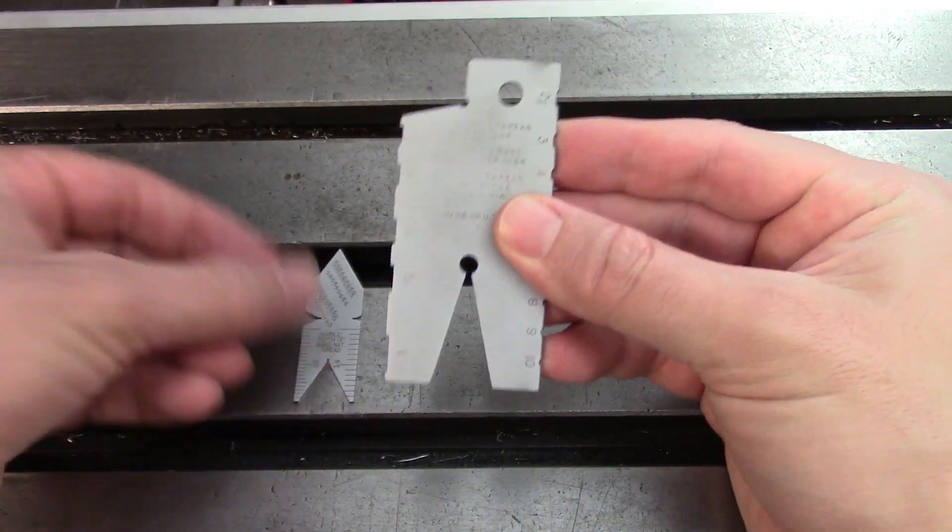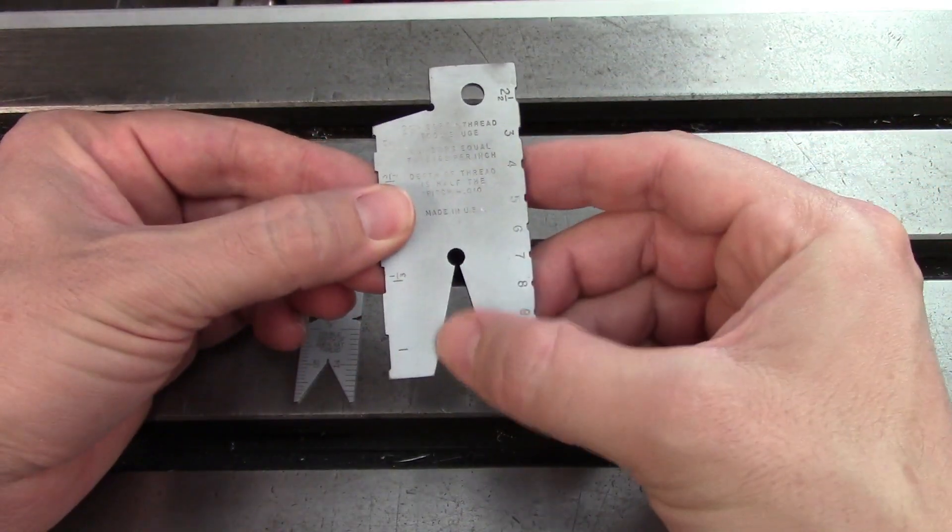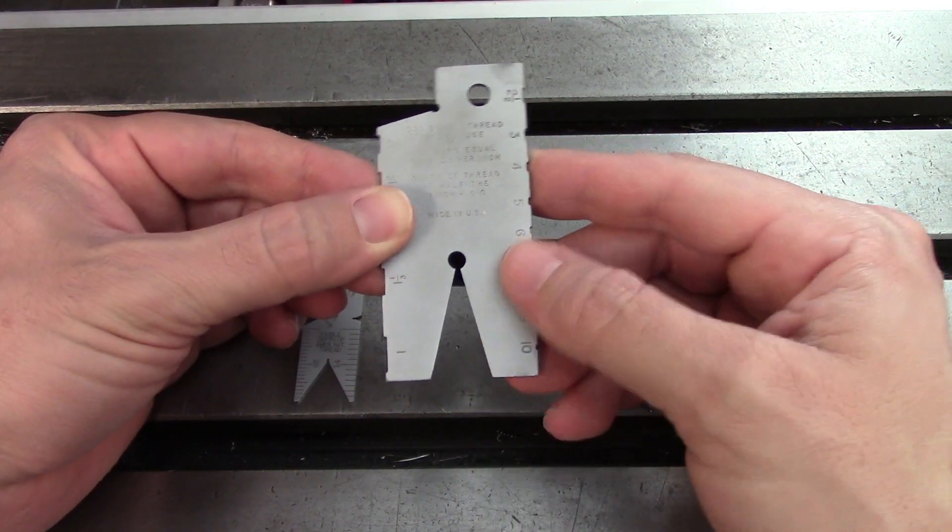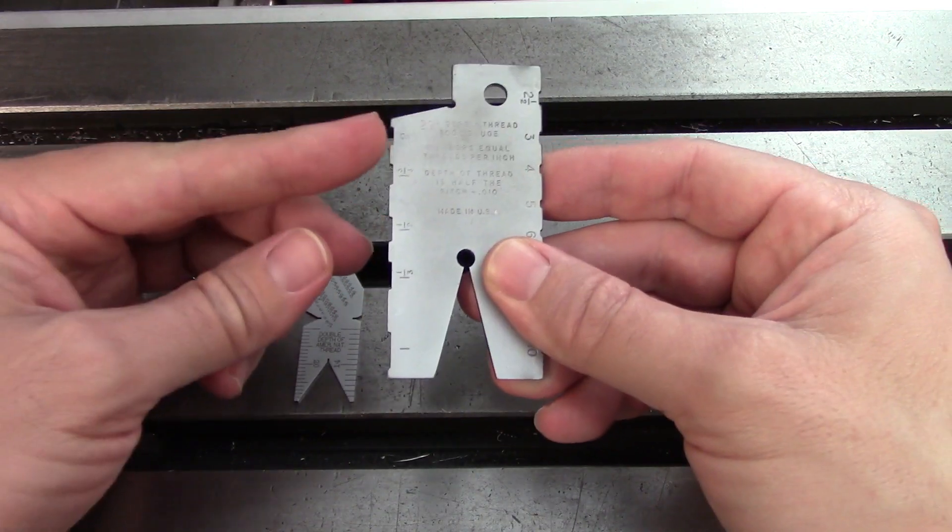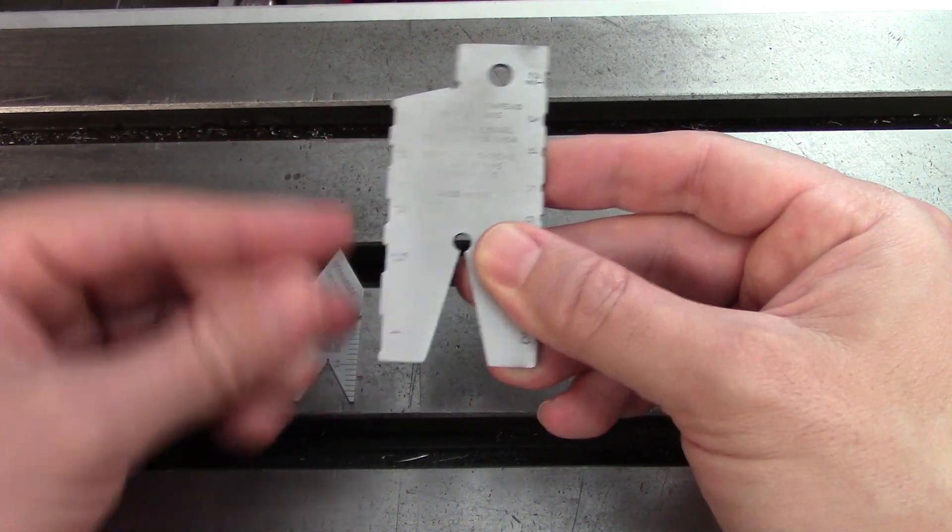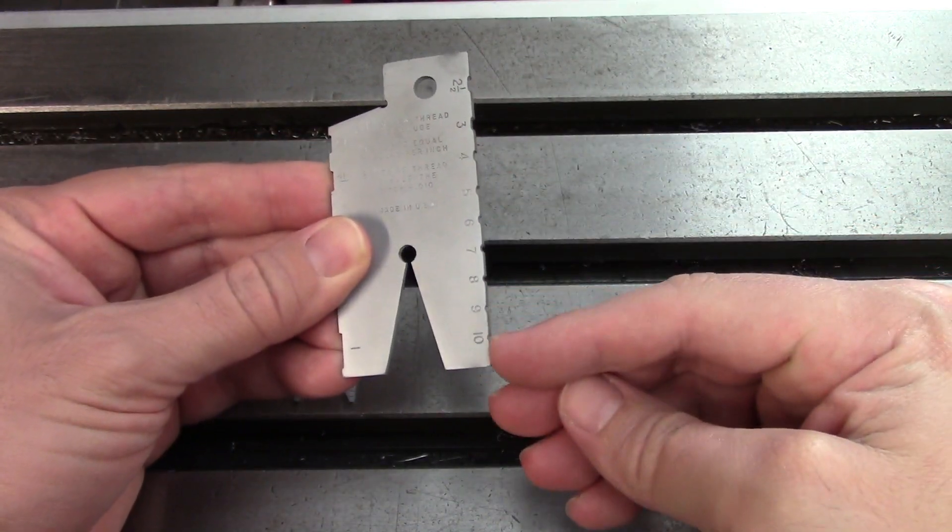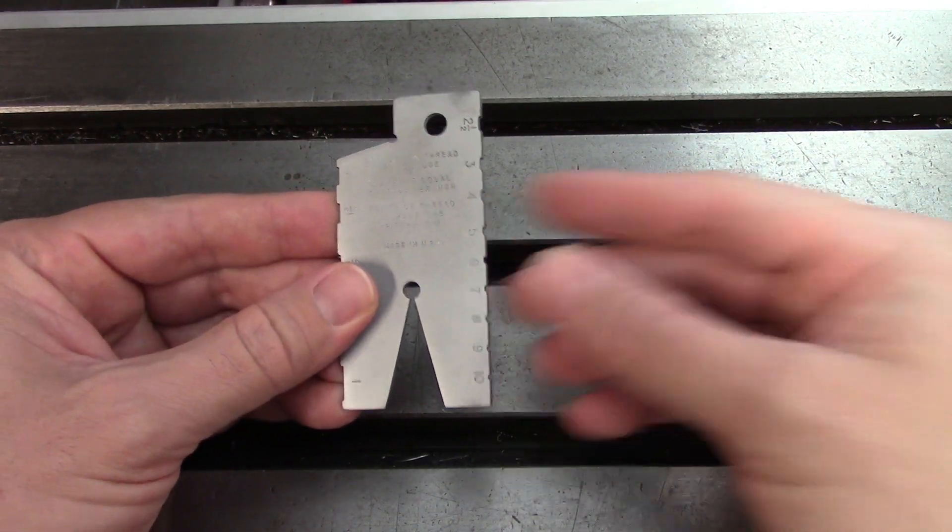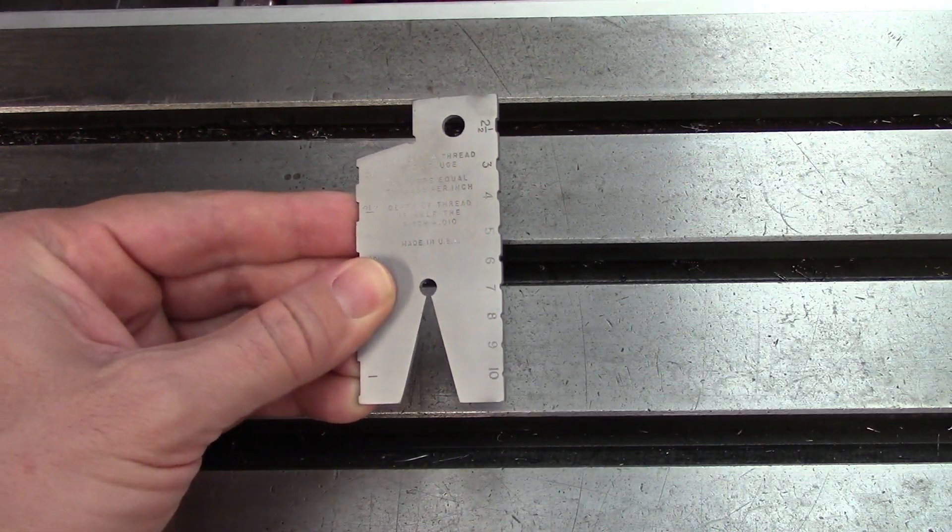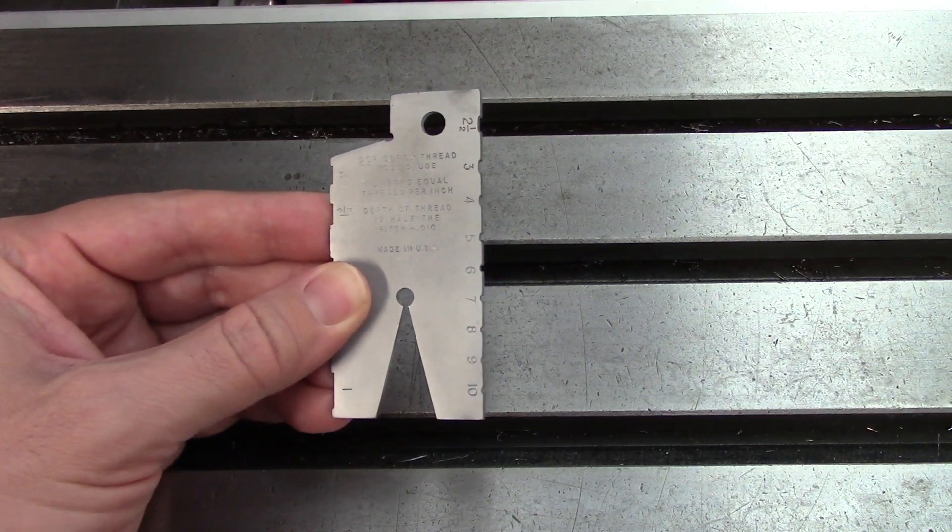This is pretty much used in the same way. This gives you your 29 degree angle that the acme threading tool has and then you also have all of these notches on the side because an acme threading tool has to have a pretty wide flat on the end. If it doesn't have the right size flat then the thread form will be incorrect.